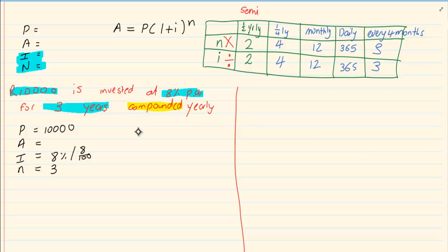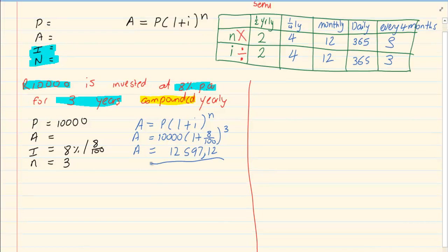Then we know it's a compounded formula. So we are going to use the compound formula. A is equal to P into 1 plus I to the power of N. Substitute. And then simply press it into your calculator giving us 12,597 Rand 12 cents.